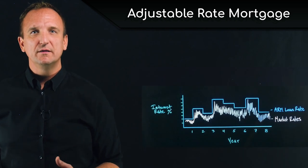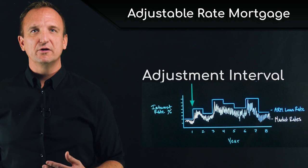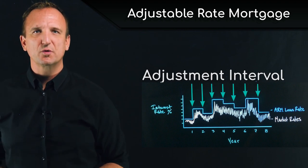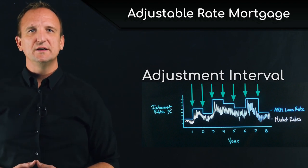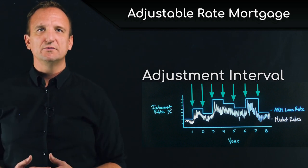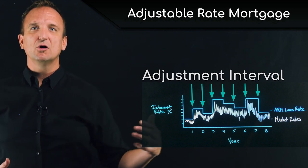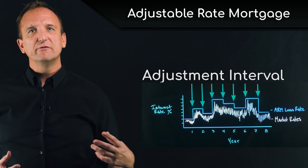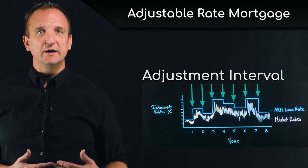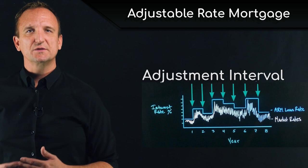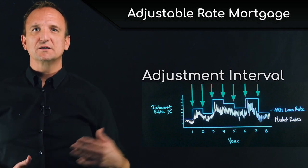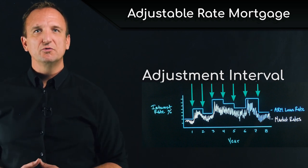The first component in the ARM loan is the adjustment interval. This determines how often the interest rate adjusts. Typically, we will see anywhere from monthly to annually to perhaps even longer intervals. The longer the interval, the more interest rate risk the lender keeps. The shorter the adjustment interval, the more interest rate risk is passed along to the borrower.